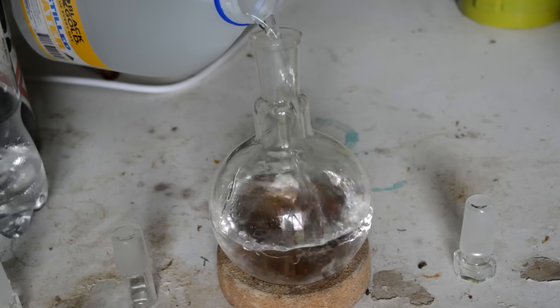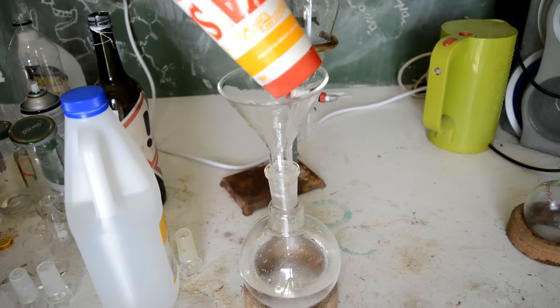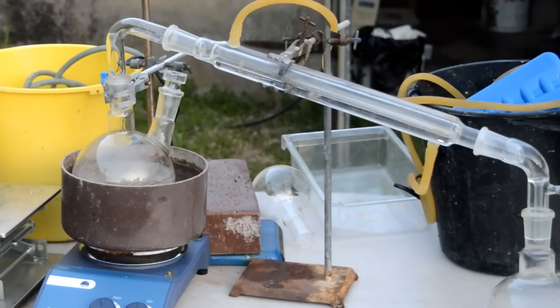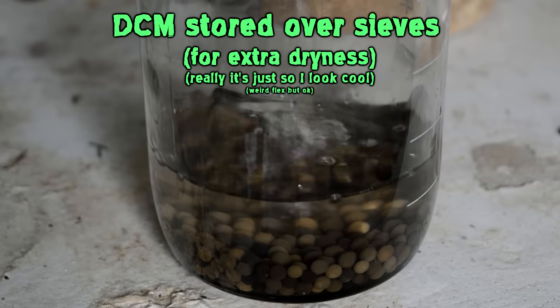To clean it up, we wash it with water to wash out any methanol. Then we just add a couple of pinches of kosher salt. Shake it around to get rid of the last bits of water. And then re-distill it. And hey presto, we have pretty clean, reasonably dry dichloromethane.